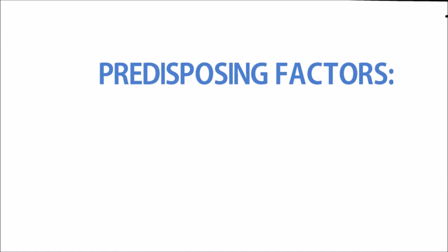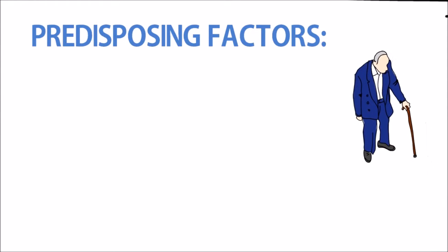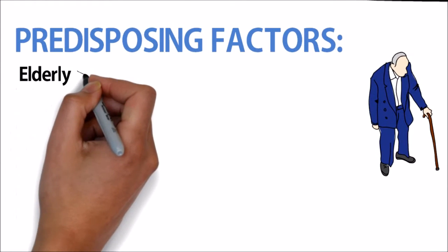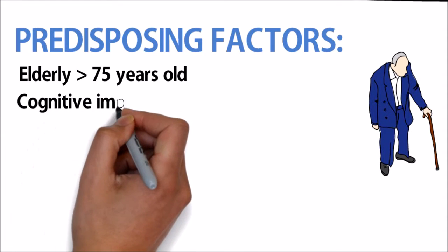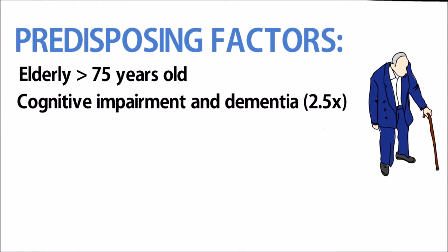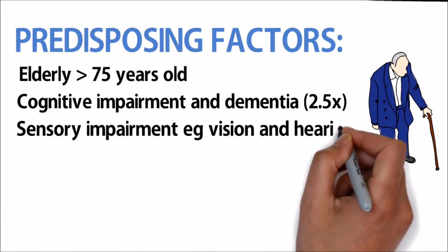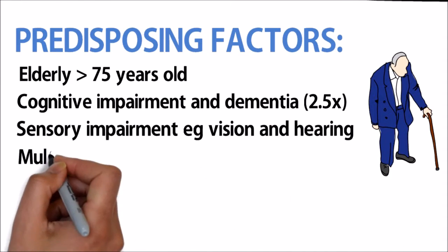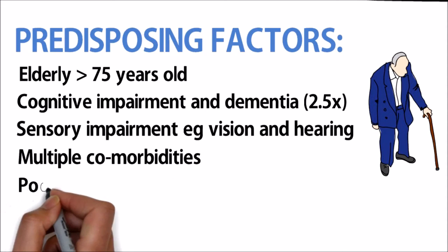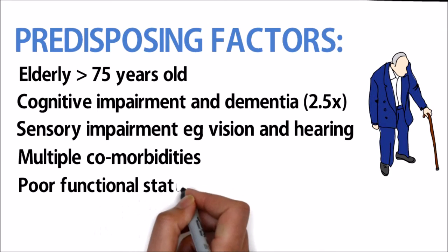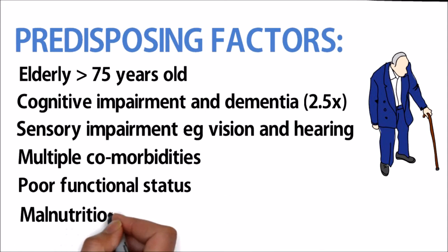For delirium, the predisposing and precipitating factors. The predisposing factors include being elderly, more than 75 years old, underlying cognitive impairment and dementia, sensory impairment such as vision or hearing impairment, multiple comorbidities with multiple medications, poor functional status especially patients who are wheelchair or bed bound, and malnutrition.